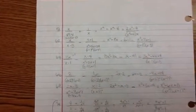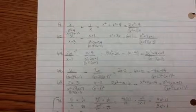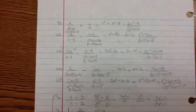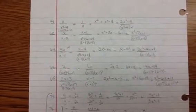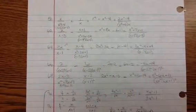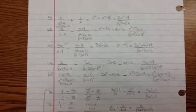For 62, I got x squared plus 7x minus 1 over x plus 8, x minus 3. Number 64, 3x squared minus 4x plus 4 over x minus 1, x minus 1.